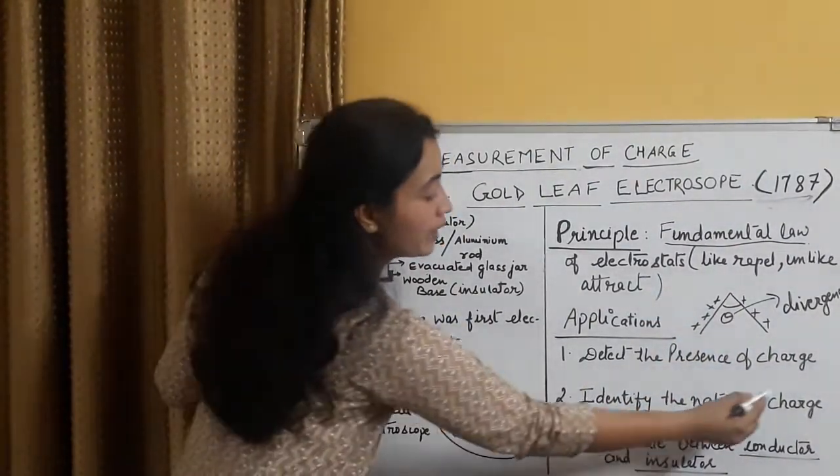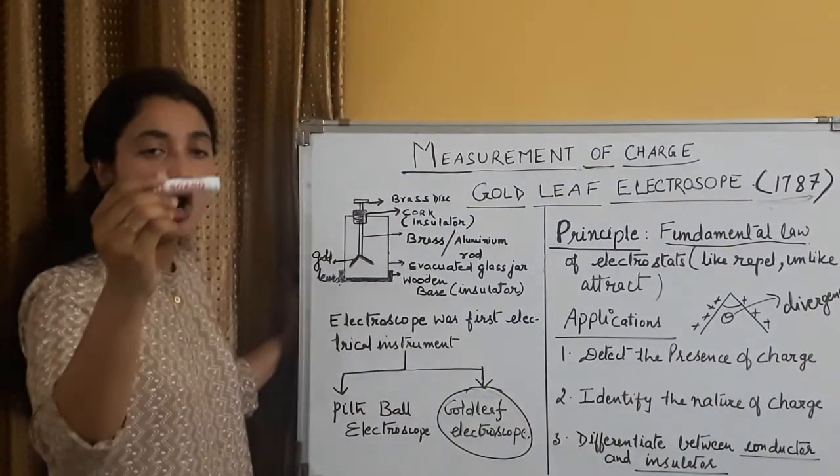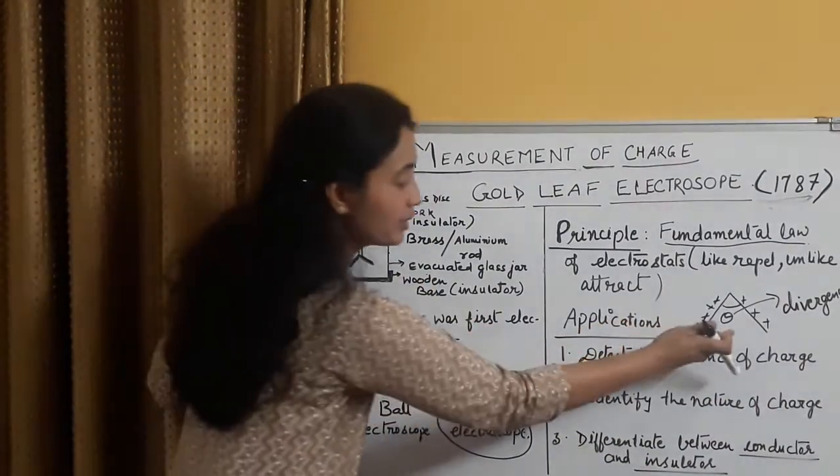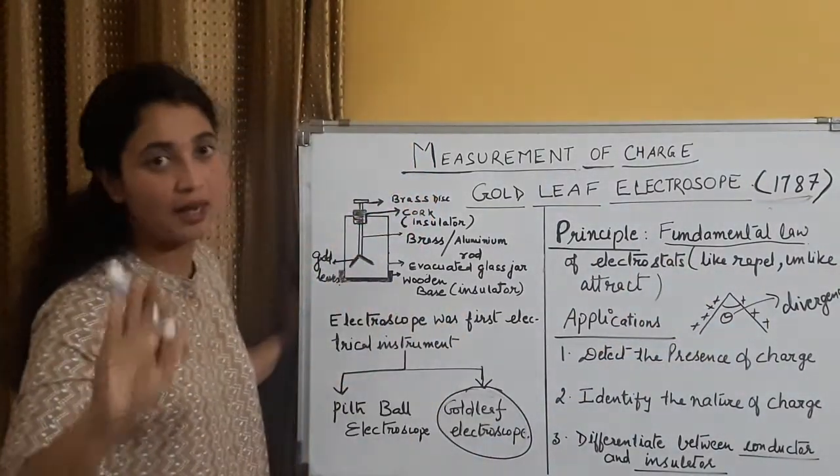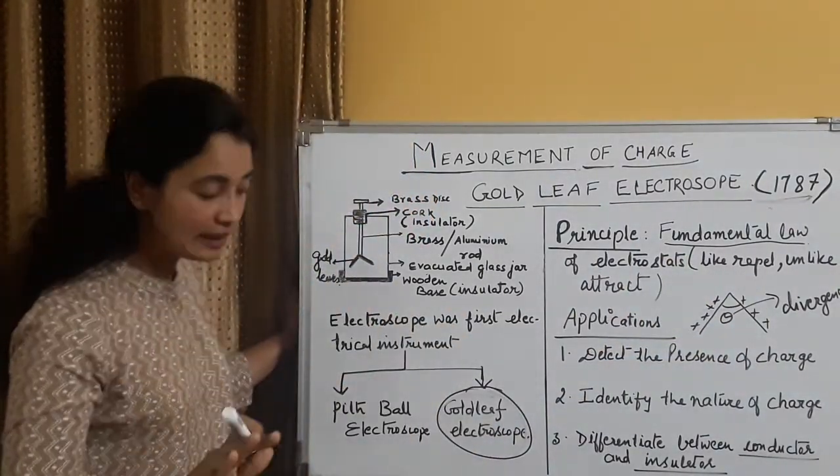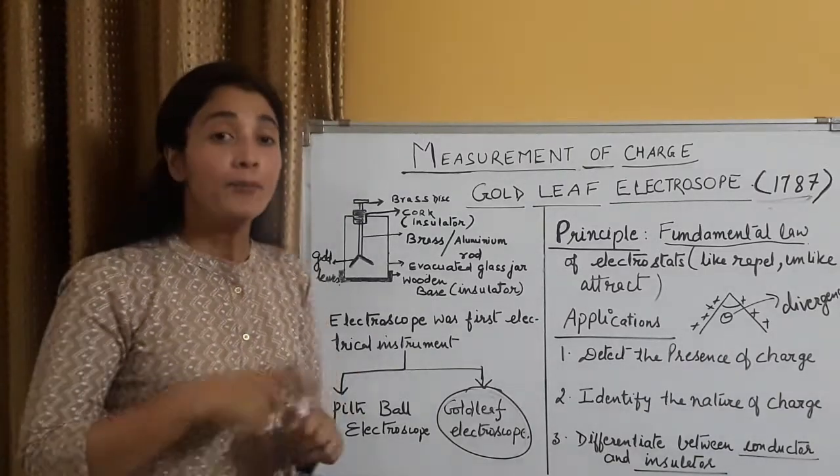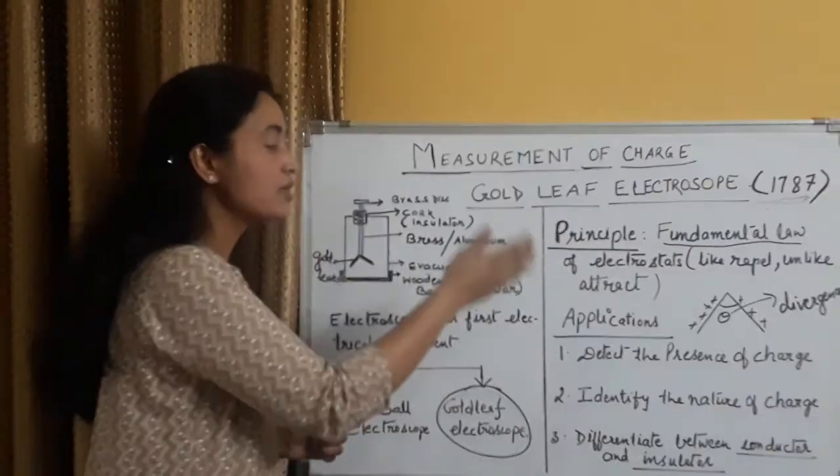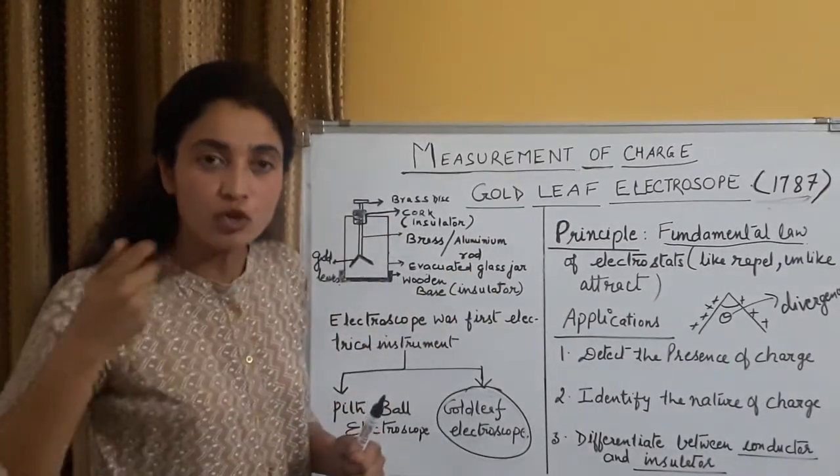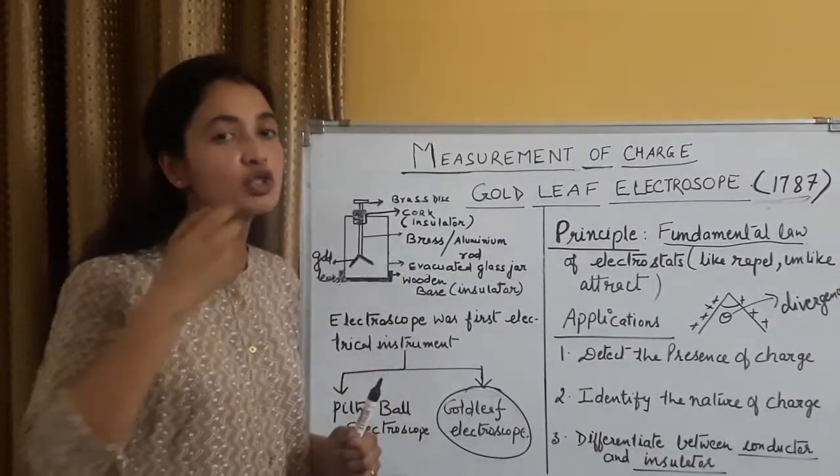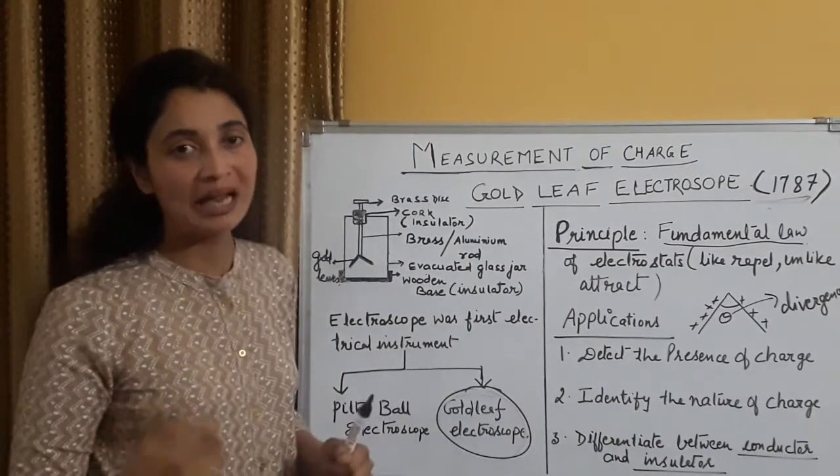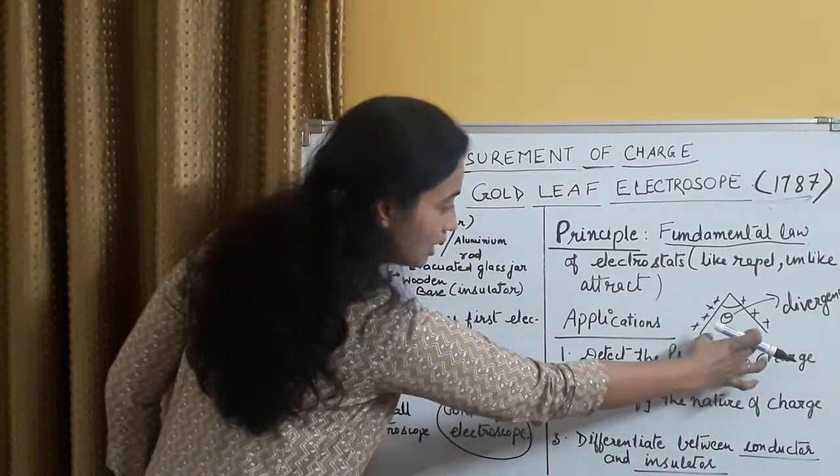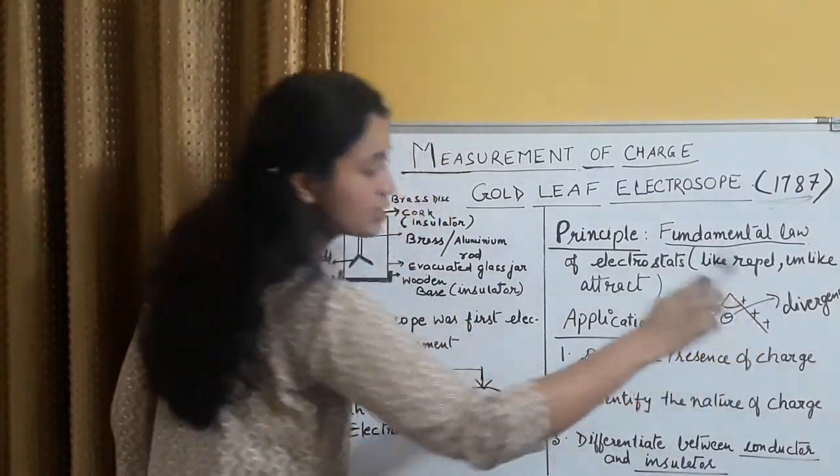Second application, identify the nature of charge. Jo mera rod hai, test rod, wo positive hai, ya negative hai. Suppose, jaise maine bataya, humne gold leaf ko pehle se positive kar rakha hai, pehle se usko positive charge diya hai. Let me make it clear, pehle se positive charge diya hai, yeh hum language mein keh rahe hai, but we know that positive charge means, we have taken out some electrons. Humne us mein se kuch electrons ko remove kiya hai, deficit of electrons. Is mein se kuch electrons nikalne pe, ye positive ho gaya hai, gold leaf, hai yeh dono ke beech mein divergence hai.